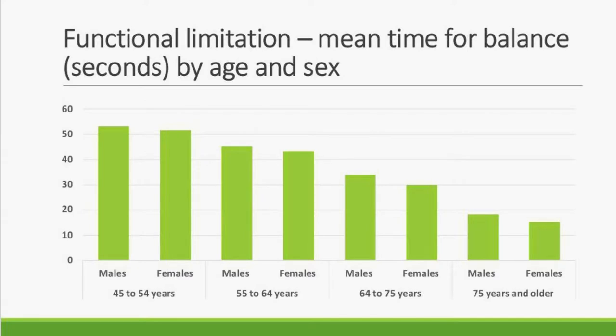The balance test, measured in seconds where longer is better, shows perhaps the most profound decrease across age groups. In the youngest participants, many have no problem balancing for the full 60 seconds, with mean balance times over 50 seconds. But in the 75 and older group, the mean balance time is less than 20 seconds. There is considerable heterogeneity — some older adults balance immediately for only one to three seconds, while others still manage the full 60 seconds. The graphs don't fully capture this heterogeneity, as many older adults are on either far end of the spectrum compared to younger adults, who consistently perform well.